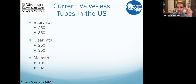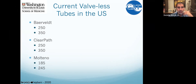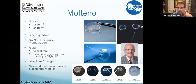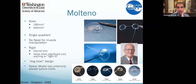These are the available non-valved tubes right now. There's also a tube called the Aadi implant out of India that does not have FDA approval, but these are the currently available non-valved tubes in alphabetical order. They typically come in two different sizes, and we'll get to that discussion. We're going to focus specifically on the Molteno, which Nova Eye is promoting.